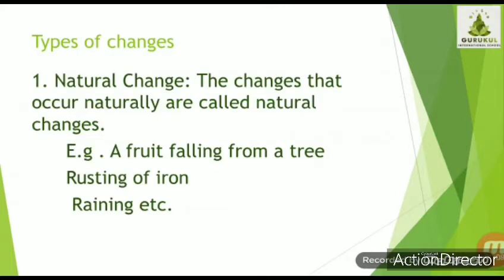In this part, let us see the different types of changes. The first type is natural change — changes that occur naturally, for example a fruit falling from a tree, rusting of iron, or rainfall. Lightning, switching on an electric bulb, and cutting vegetables are man-made changes. Changes done by man to manufacture things needed in daily life all come under man-made changes.